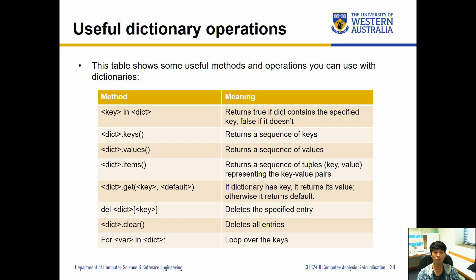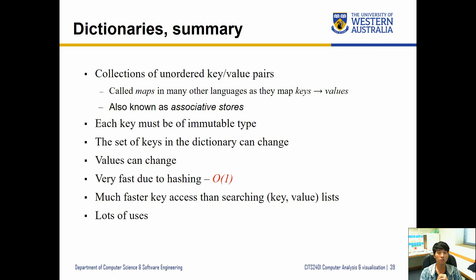So in summary, dictionaries have collections of unordered key value pairs. So this is the difference between the sets and dictionaries, where sets are individual items but in dictionaries they have key value pairs. Each key must be immutable type, but the values associated with each key can be mutable. That means they can be updated or changed freely. The set of keys in the dictionary can change, so which means you can always add new keys or remove existing keys. And it's very fast due to hashing, similar properties as the sets that we have seen before. And it has much faster key access than searching key value lists. And as we seen a couple of slides back, it has a lot of users in practice as well. So that's it for just going through some examples and the summary of dictionary. Otherwise, I'll see you in the next video. Bye.